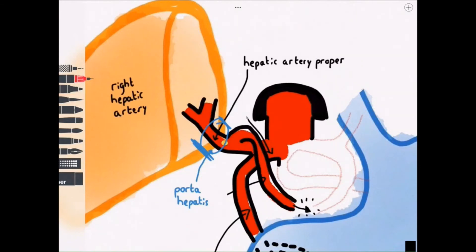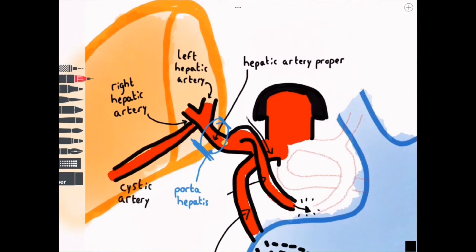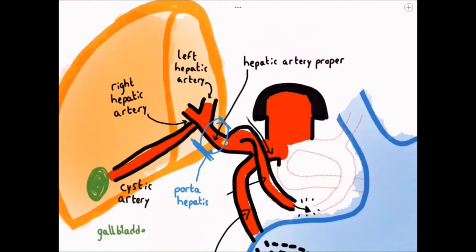So the hepatic artery proper gets to the liver and forms the right and left hepatic arteries to supply the liver, and from the right hepatic artery in 70% of individuals we get the cystic artery which goes to supply the gallbladder.